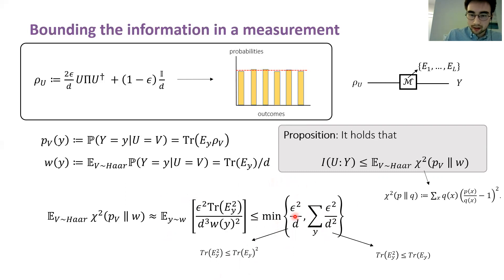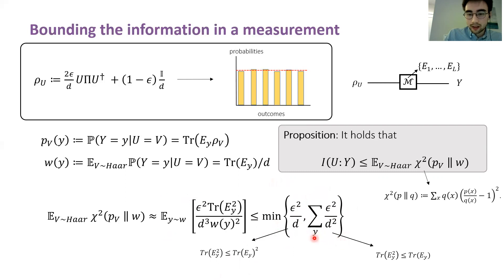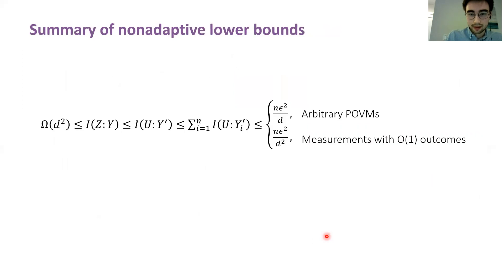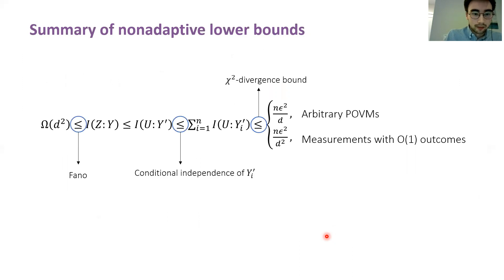The first upper bound leads to the lower bound of d-cubed in the non-adaptive case, due to Ha and others. The second bound is completely useless unless the number of outcomes you can resolve is not too large — in particular, if this sum is over a constant number of terms, this is actually a better upper bound asymptotically. To summarize the non-adaptive lower bound argument: we use Fano's inequality, exploit conditional independence of the random variables, and then apply the chi-squared divergence upper bound.